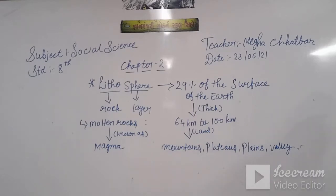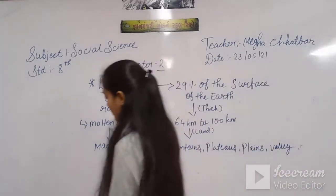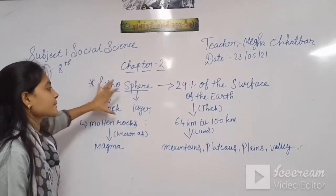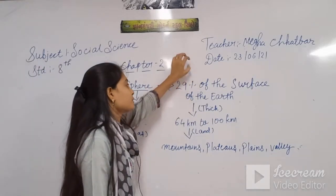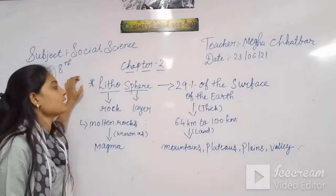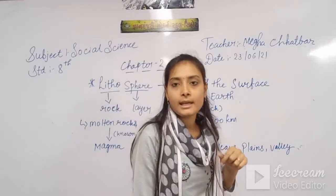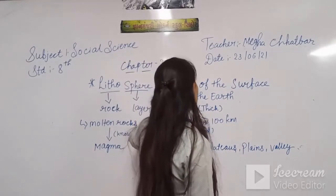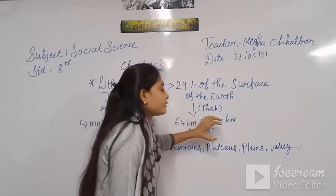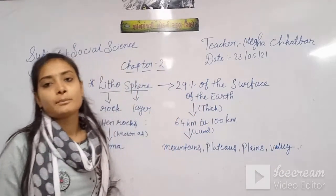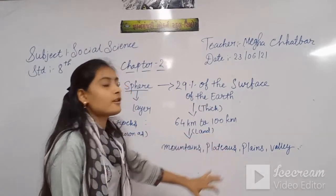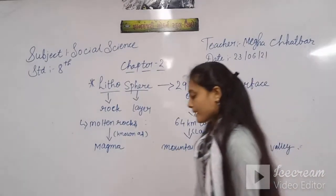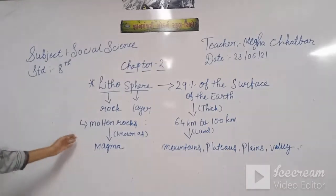Now I am repeating the keywords. Litho means rock and sphere means layer — lithosphere. 29% of the surface of the earth is made up of lithosphere. The thickness is 64 km to 100 km. Landforms include mountains, plateaus, plains, and valleys. Molten rocks in the interior are known as magma.